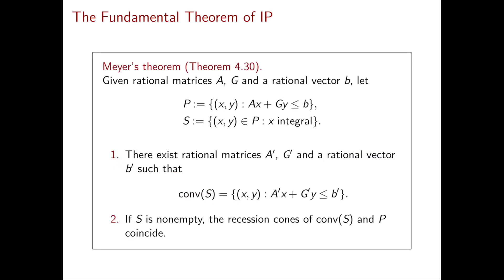This is essentially what we used back in chapter one when we discussed that solving a mixed integer linear programming problem reduces to solving a linear programming problem over the convex hull of S, exactly because convex hull of S is a rational polyhedron. So we're using the results we're going to prove. Here is the statement of Meyer's theorem, which is the fundamental theorem of integer programming.